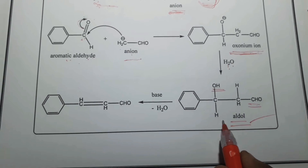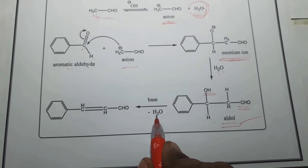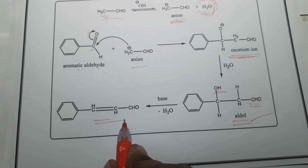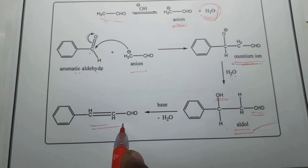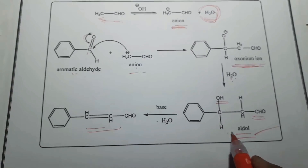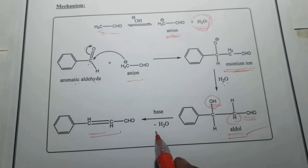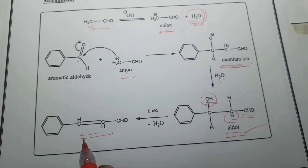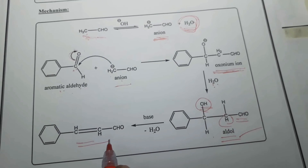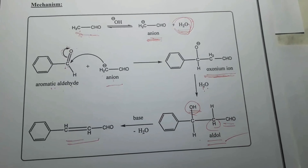Further, this aldol intermediate produced in the reaction undergoes subsequent elimination of water, leading to produce the respective alpha-beta unsaturated aldehyde, ketone, or ester compound. The aldol loses the OH and the hydrogen as a water molecule, producing the alpha-beta unsaturated derivative. That is the mechanism of Claisen-Schmidt condensation.